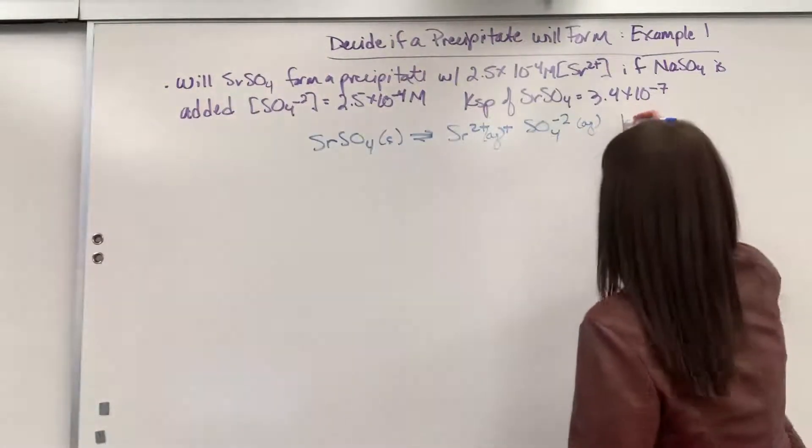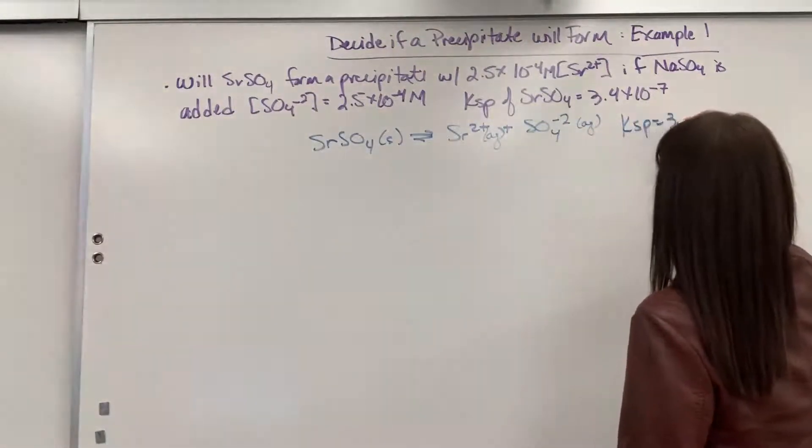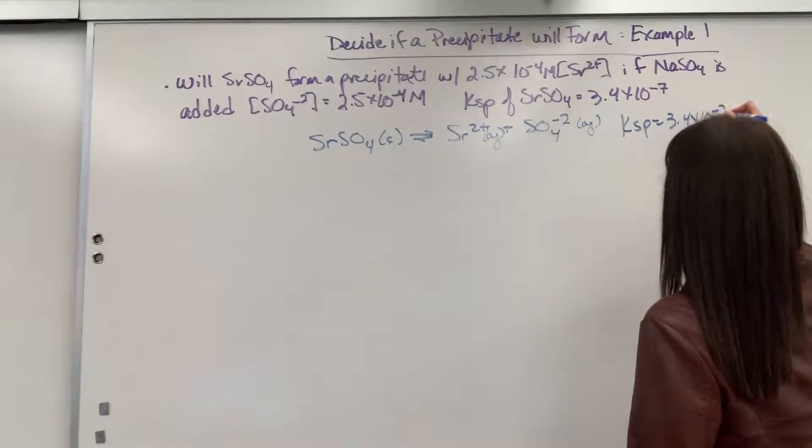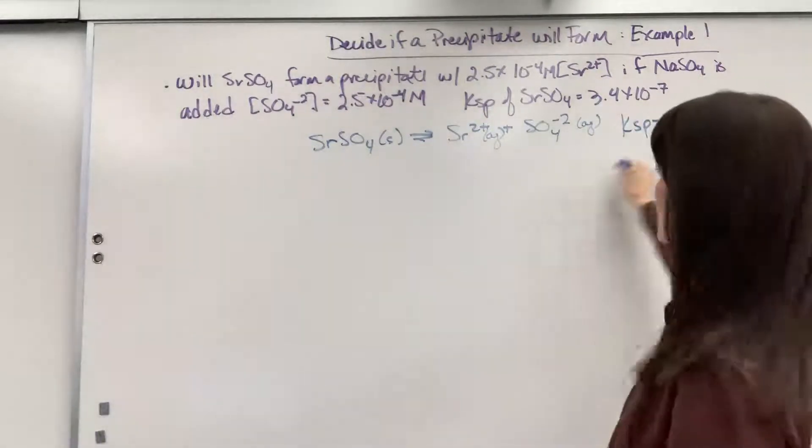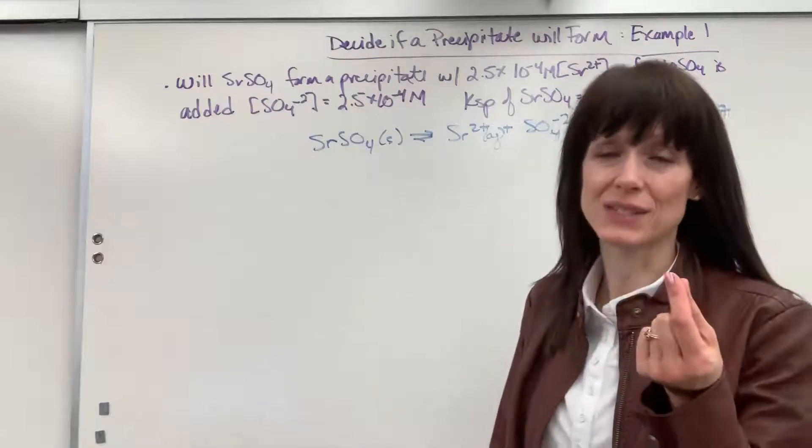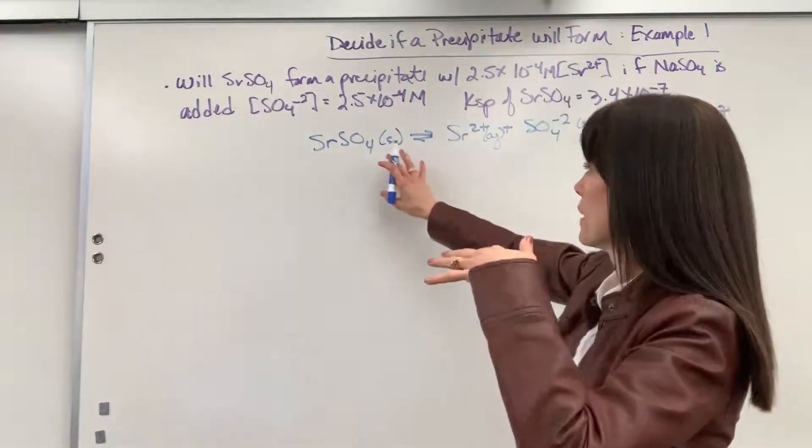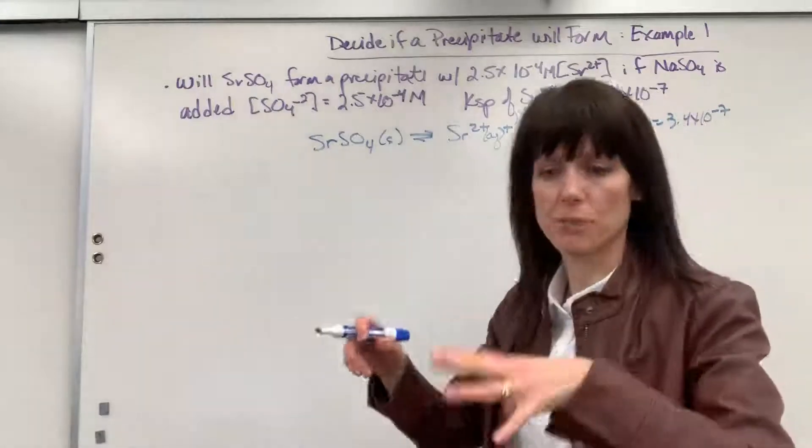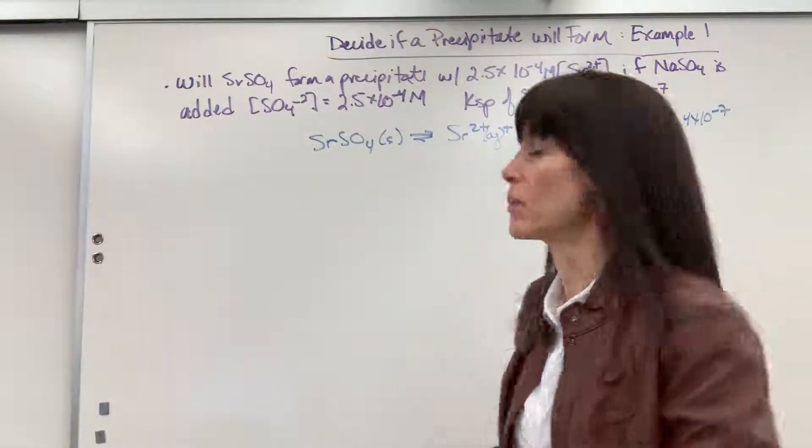And the Ksp on this is the 3.4 times 10 to the minus 7. So, it tells us really reactant favored since it's less than 1. It only tiny, tiny, tiny dissociates. It's only a little bit when you have this substance. If I were to put it in water, only a little bit would break apart.